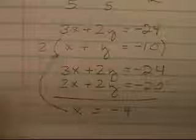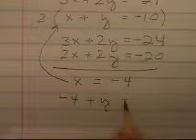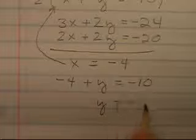Let's plug it back into one of the original equations. I kind of like this one here. The numbers seem to be small. If x is negative 4, this will be negative 4 plus y is negative 10. Let's add 4 to both sides. y turns out to be negative 6.